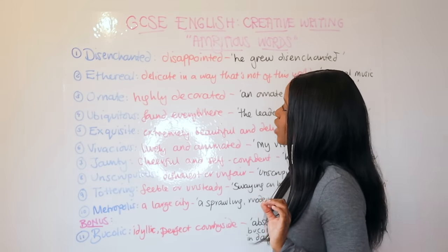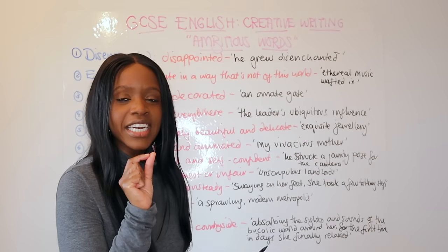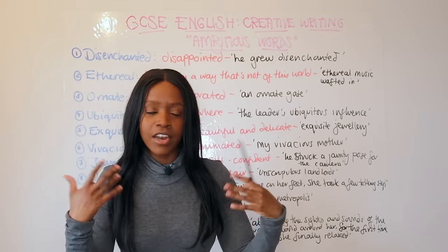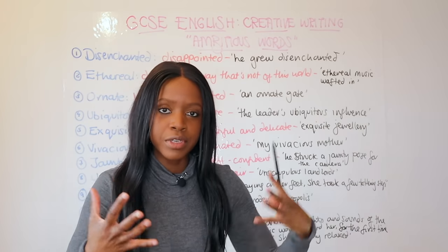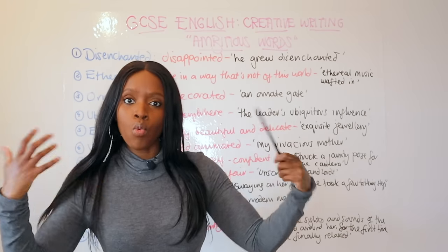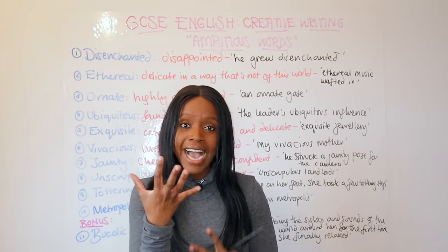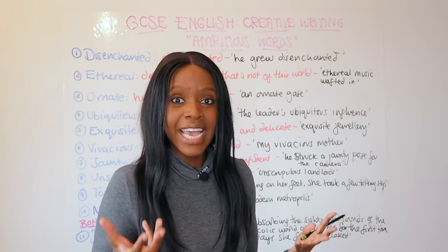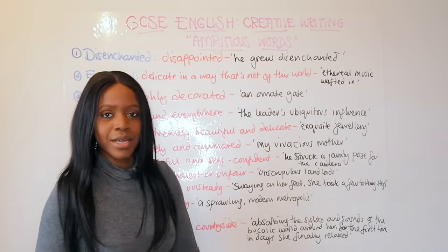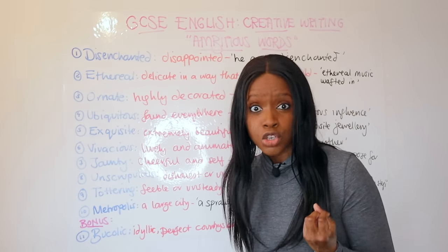Starting off, word number one is 'disenchanted' — a really nice and powerful adjective that simply means disappointed. A great way to use it in your story: if your protagonist grew disenchanted with a friend, or if he arrives at a location he'd built up excitement around, sees it, it doesn't meet his expectations, and he grows disenchanted with it. That's your first ambitious word to incorporate into your creative stories.